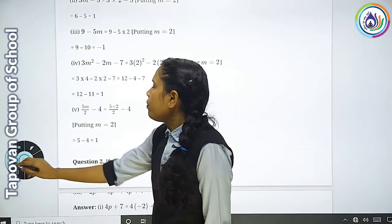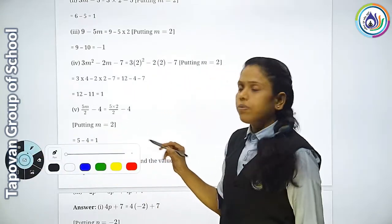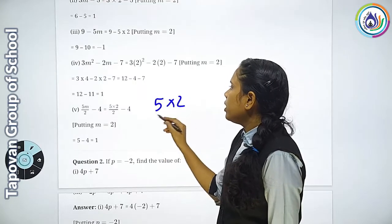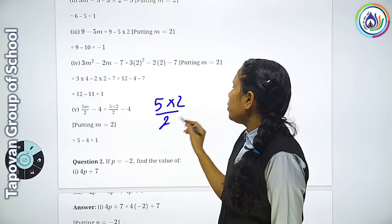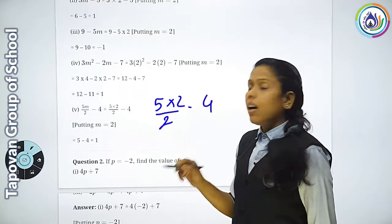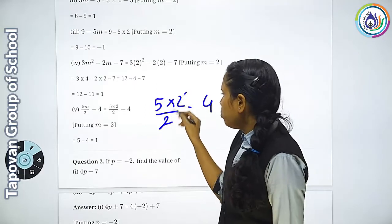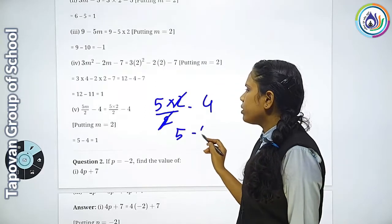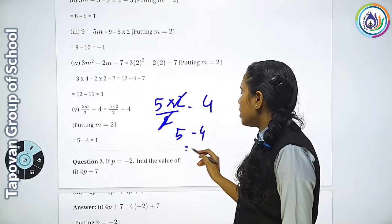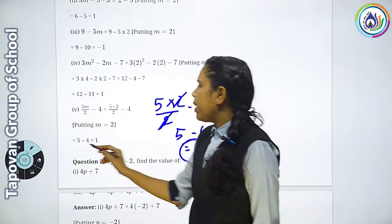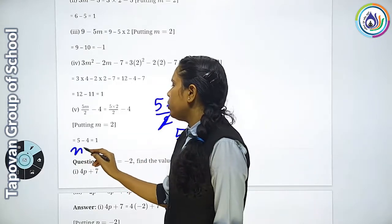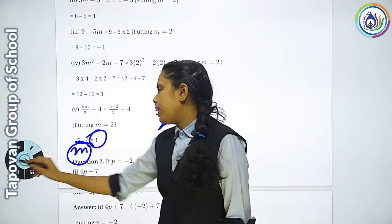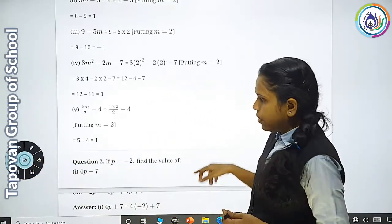Then 5th number: 5m/2-4. तो 5×2÷2-4. यहाँ पर 2 और 2 multiply में cut हो जाते हैं, तो 5-4=1. Answer कितना आया? 1. इस equation का answer 1 है।